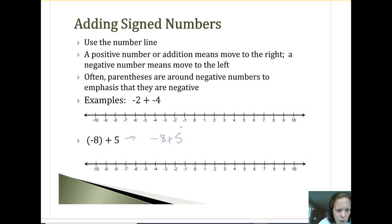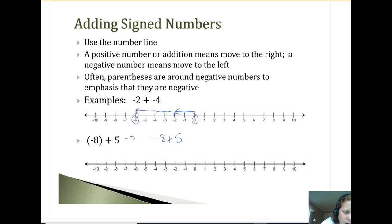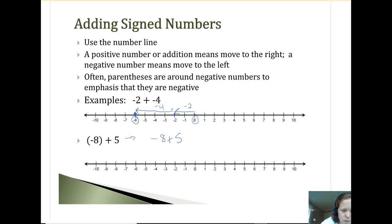For the first one: negative two plus negative four. We start on zero. If I move to negative two, I'm right here. Then I'm adding another negative four, so I'm still going to the left — one, two, three, four — I end up at negative six. So if it's negative two degrees out and then it drops four degrees, now it would be negative six degrees.